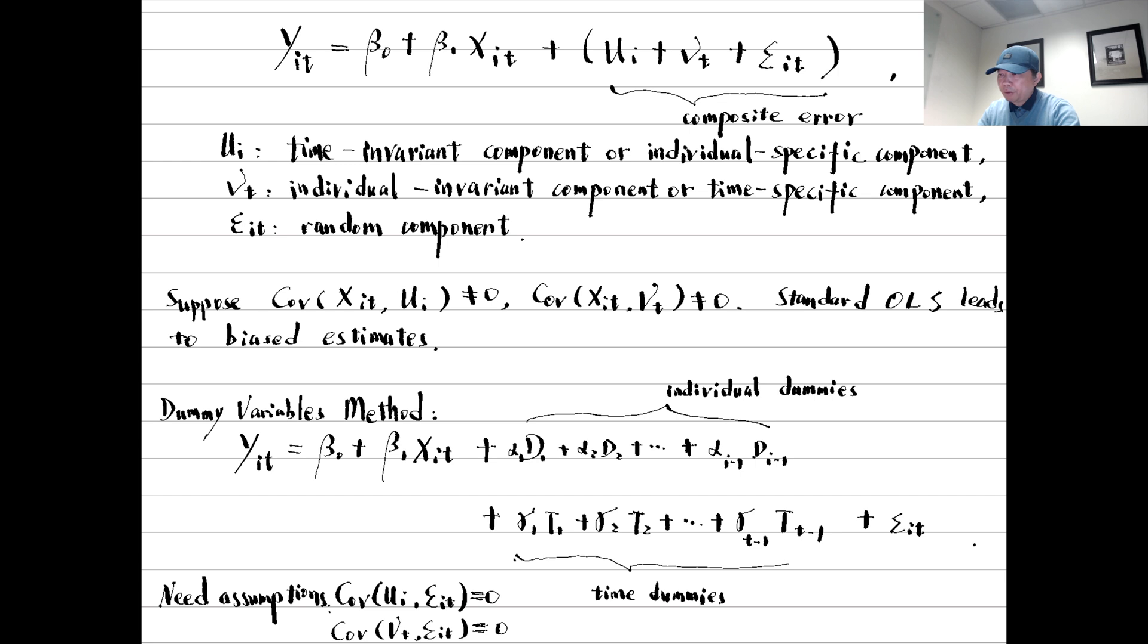We can accomplish it with the panel data structure. It is impossible with cross-sectional data. In the last video, we learned the first differencing method. In this video, let's explore the dummy-variables method.